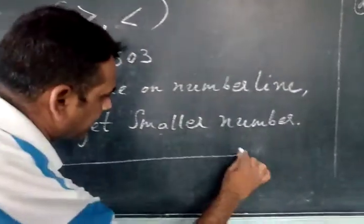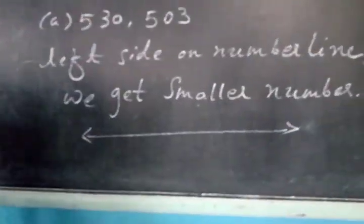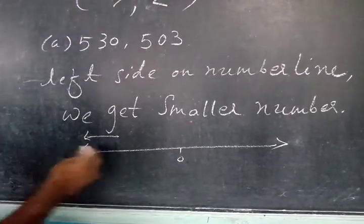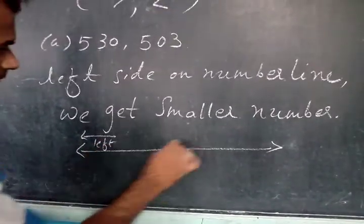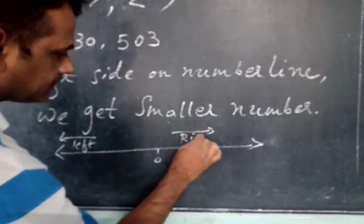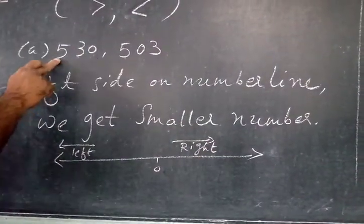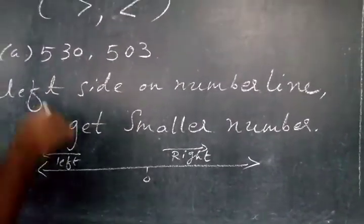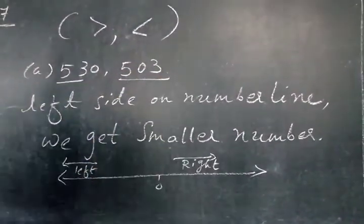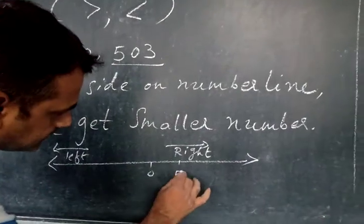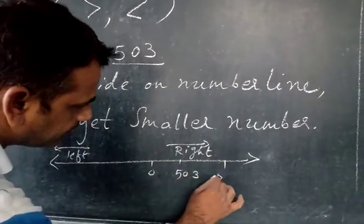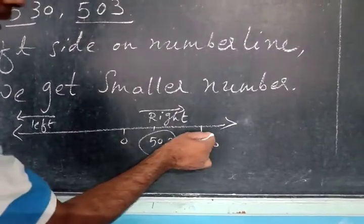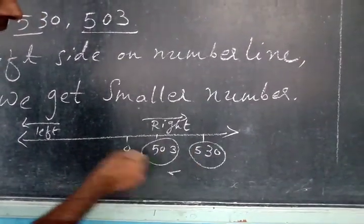According to the number line — suppose this is 0 — so left side and right side. Now we are having two different numbers, 530 and 503. If we compare both numbers, 503 is lying first and then 530, because 503 is smaller than 530, so it's lying on the left side.